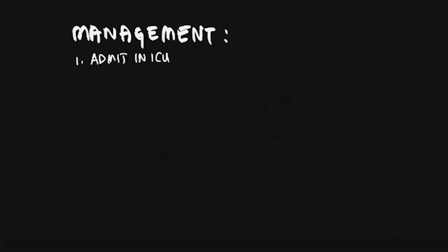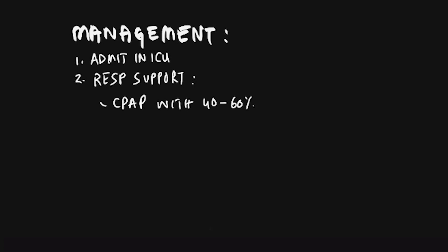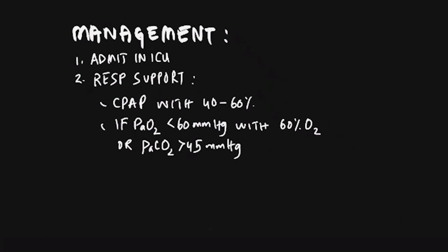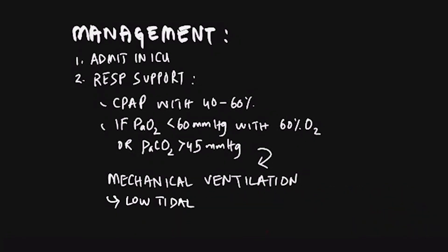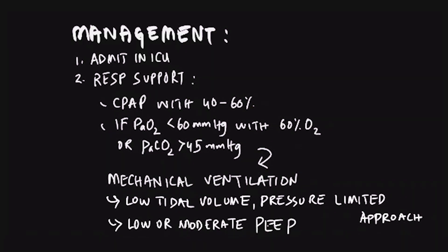Coming on to management. Management includes admission to ICU and supportive therapy. In early ARDS, continuous positive airway pressure is given with 40–60% oxygen, which may be adequate to maintain oxygenation. However, most patients need low tidal volume mechanical ventilation. Indications for mechanical ventilation include PO2 less than 60 mmHg despite 60% oxygen or rising PaCO2 more than 45 mmHg. A low tidal volume, pressure-limited approach with low or moderate-high PEEP improves outcome.